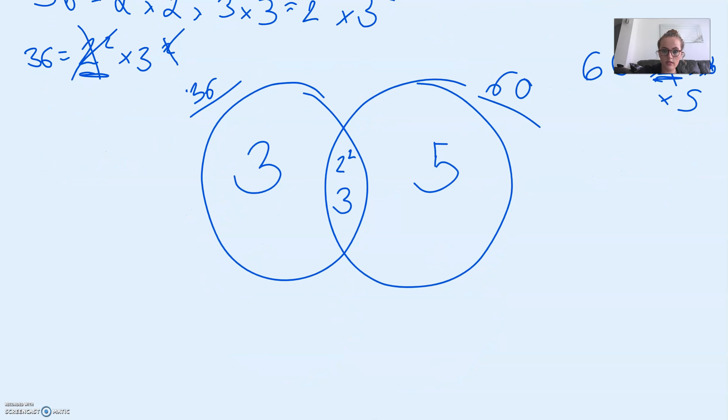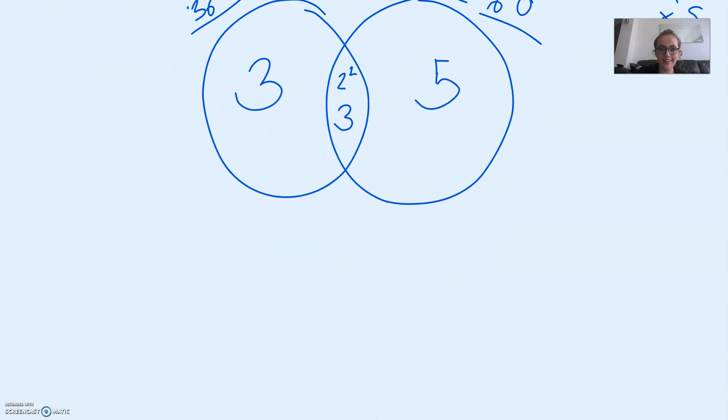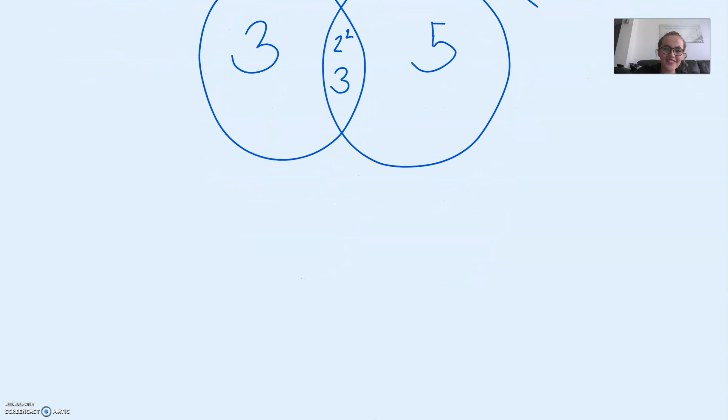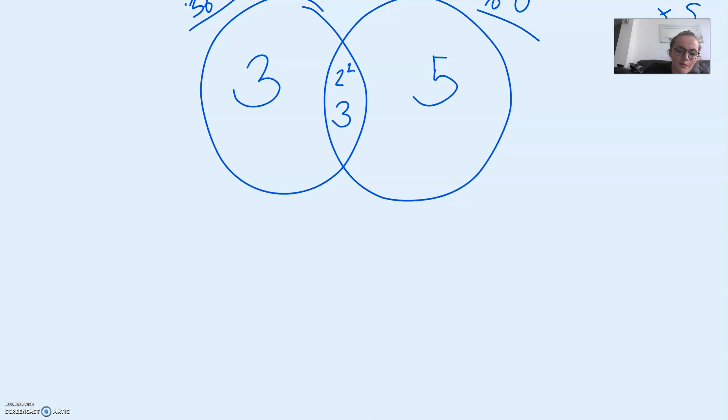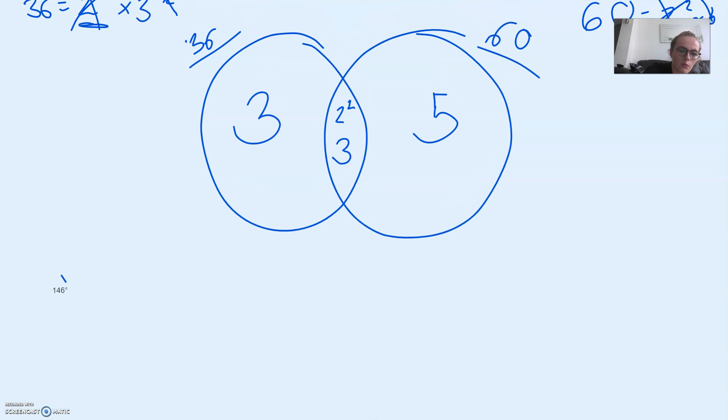For now I will move on, but obviously if I was talking to a real person it would depend on their response. So now we have this Venn diagram. To find the highest common factor, we are going to multiply all the numbers that are in the middle section. So all the numbers in this section here, which is 2 squared times 3, which is going to be 2 times 2 times 3, which is 12.